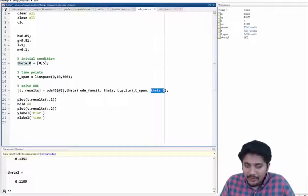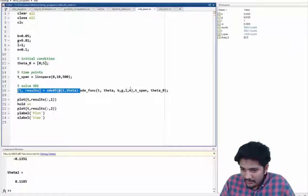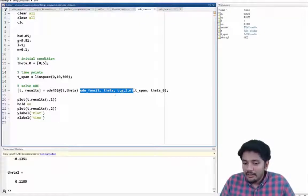Now this might be a bit confusing so let me repeat it again. So here you first define your ODE is a function of t and theta and then you basically say how your ODE function is defined.